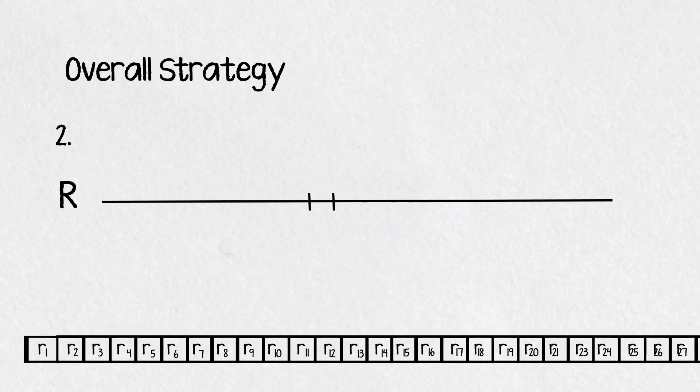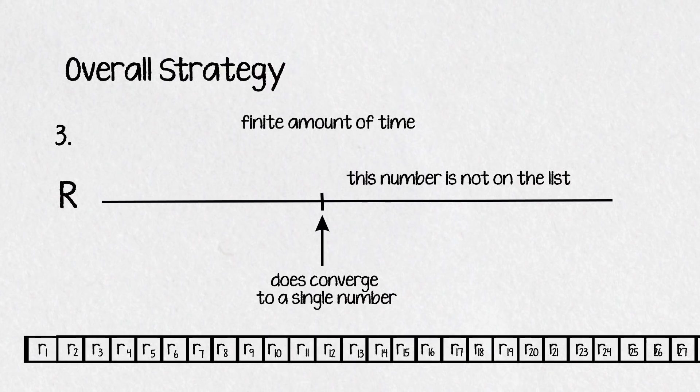Then we'll show that if it does converge to a number then either it must take an infinite amount of time to do so, meaning that the number the interval converges to can't be on the list, or it takes a finite amount of time to converge, meaning that the list must be missing some other real numbers. If that made absolutely no sense don't worry, it will I hope. Alright let's get started.